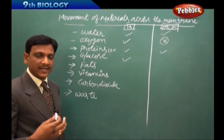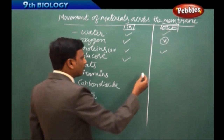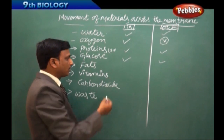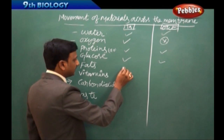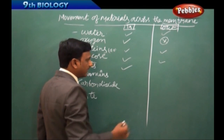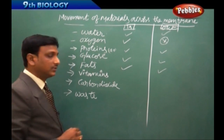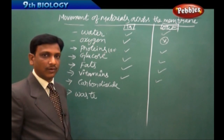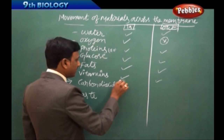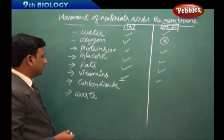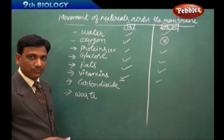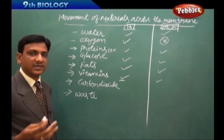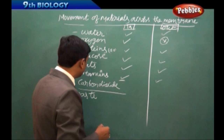Glucose enters the cells for the process of respiration, and in some cases glucose may also come out. Fats enter into the cell in the form of fatty acids and they can also come out — both directions occur. Vitamins can go inside the cell and in certain cases also come out, but in most cases vitamins go inside. Vitamins and minerals absorbed from food are taken into cells for various metabolic activities.